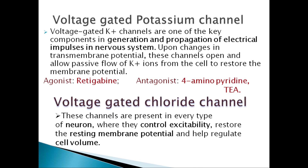Voltage-gated potassium channels are one of the key components in the generation and propagation of electrical impulses in the nervous system. Upon changes in the transmembrane potential, these channels open and allow the passive flow of potassium ions from the cell to restore the membrane potential. Voltage-gated chloride channels are present in every type of neuron, where they control excitability, restore the resting membrane potential, and help regulate cell volume.